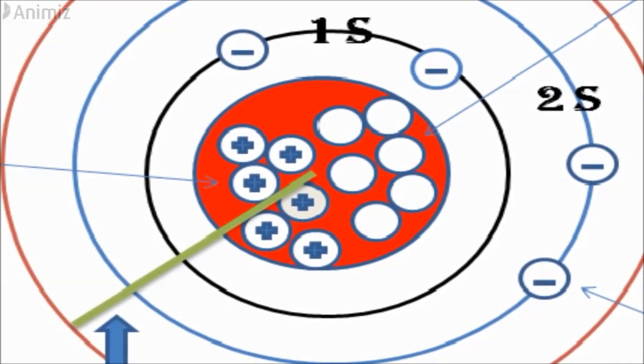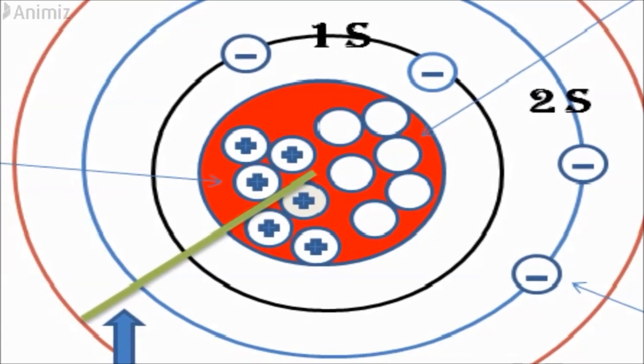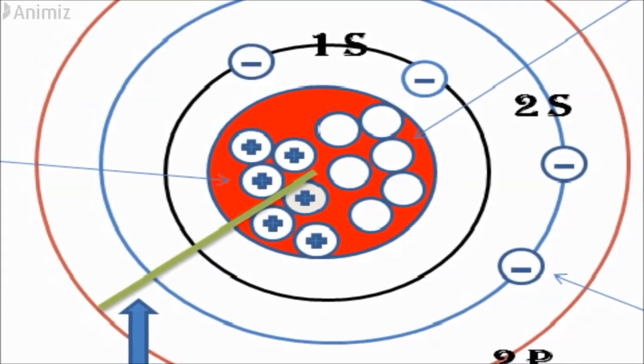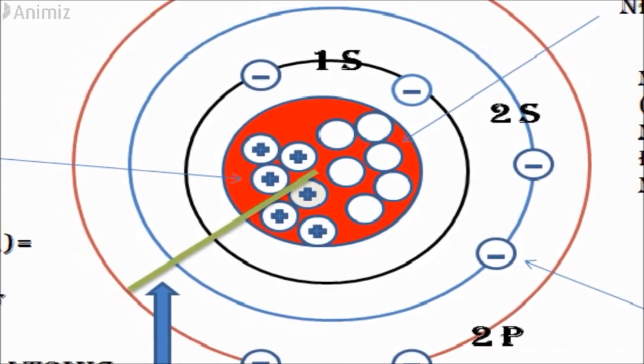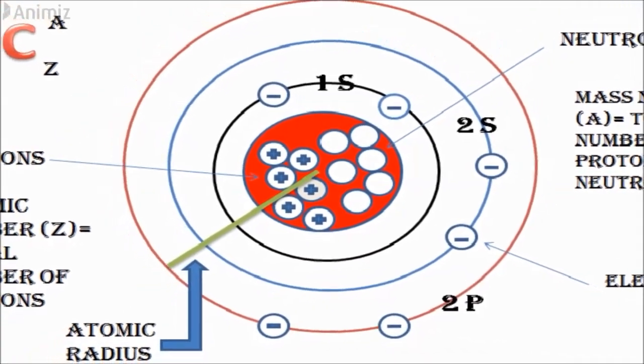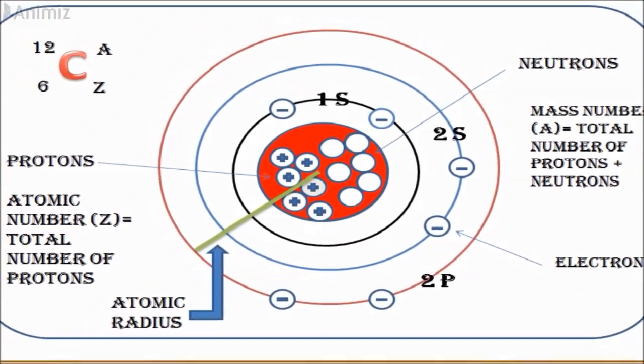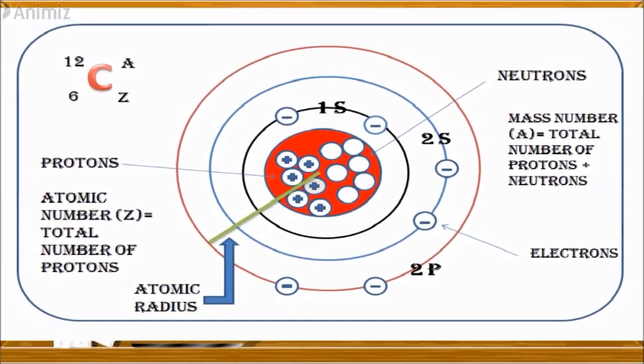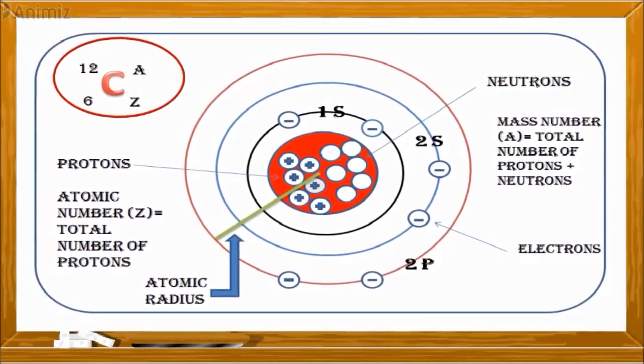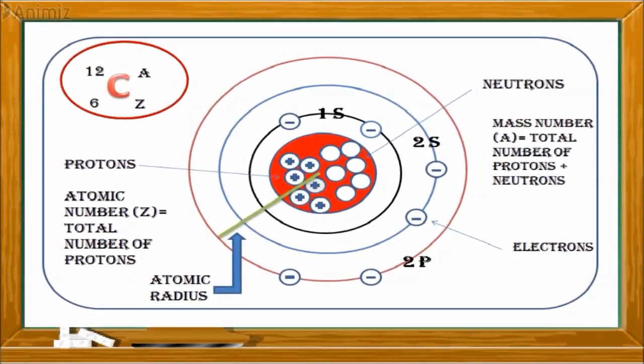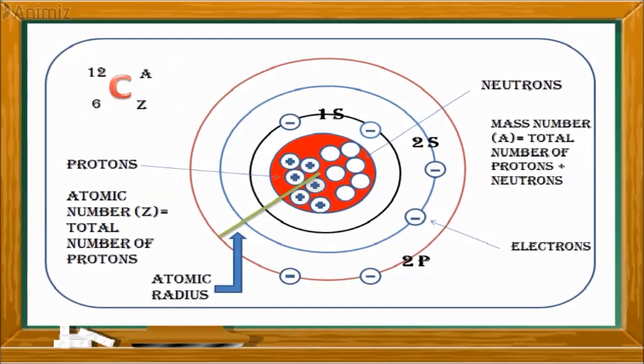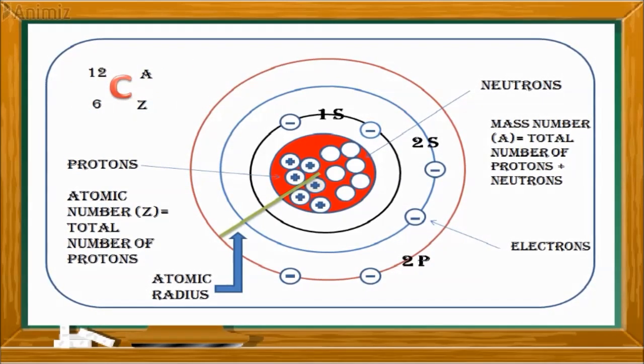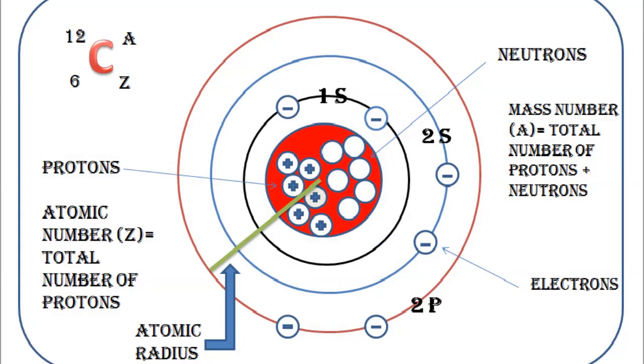So here you can see the element carbon where there is a nucleus and it contains six protons. So the atomic number of carbon, that is Z, is six, and it also contains six neutrons. So the mass number, which is the total number of protons and neutrons, becomes 12. As you can see, there are six protons and six electrons which are revolving around the nucleus.